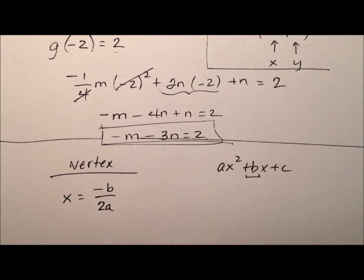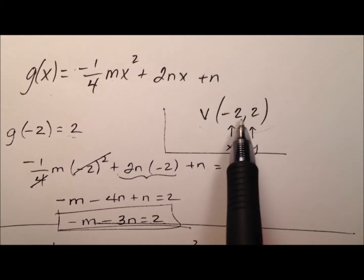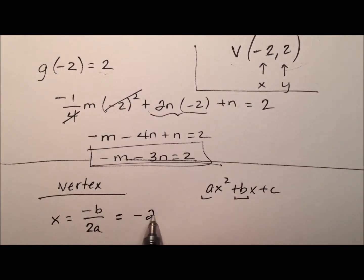Well, the b is just this coefficient for the linear term and the a is just the leading coefficient. I also know that the x value of my vertex was given to me and that's negative 2.